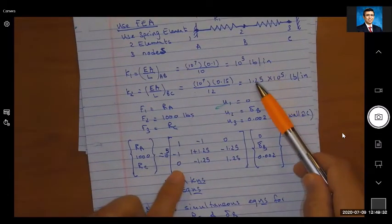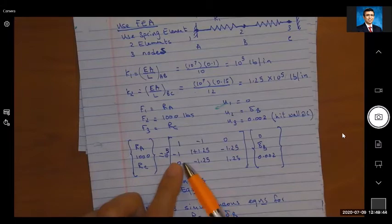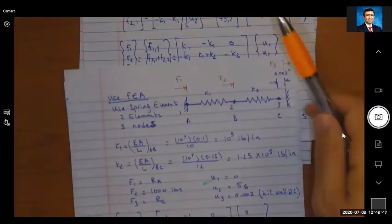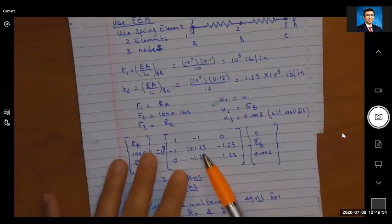So I'm going to write: for f1 I'm going to have Ra, for f2 I have 1000, for f3 I have the Rc. u1, u2, u3, these are going to be 0, u2 or ub, and 0.002. So I have here Ra, 1000, Rc, 0, delta B, and 0.002.